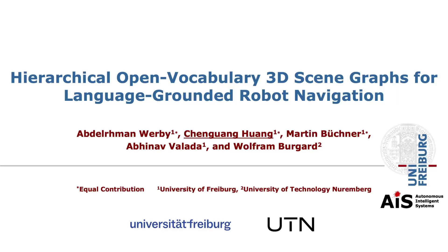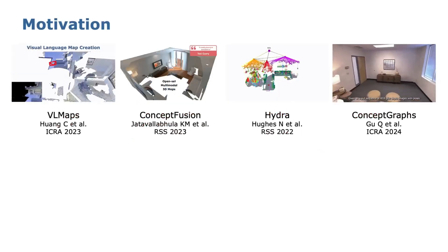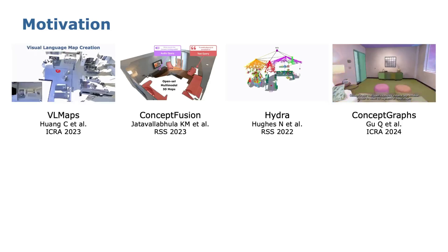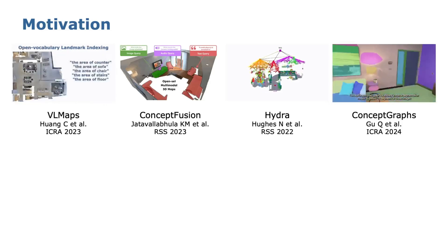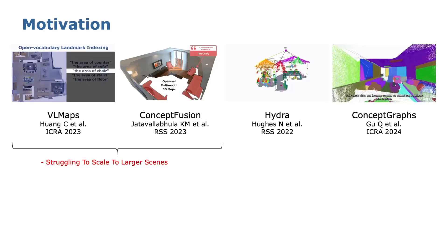We present hierarchical open vocabulary 3D scene graphs for language-grounded robot navigation. Current dense VR mapping such as VR maps and Concept Fusion struggle to scale to larger scenes due to their storage overhead.